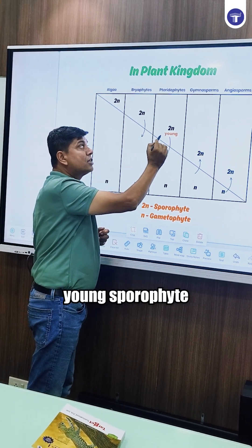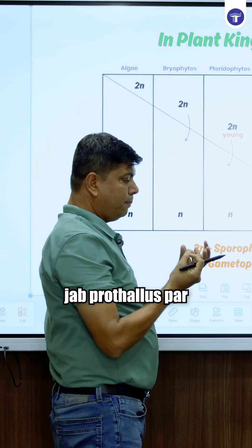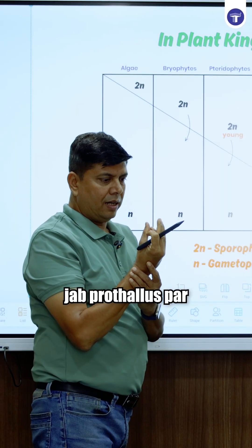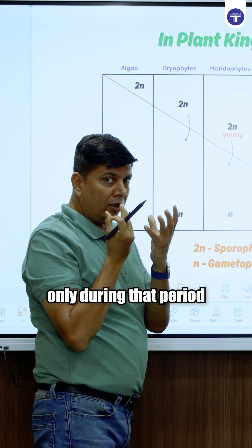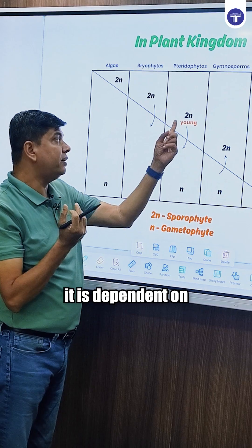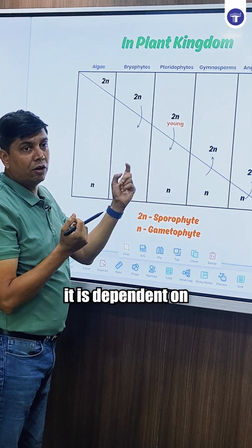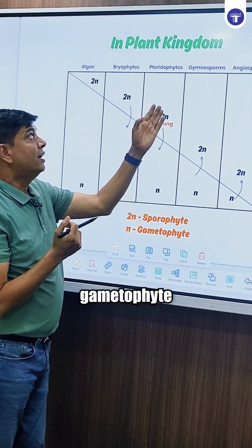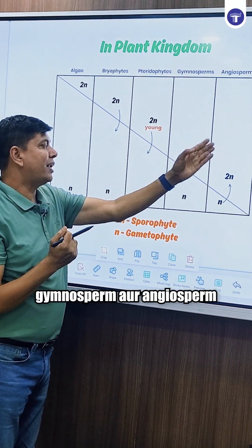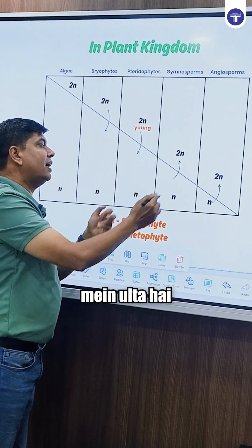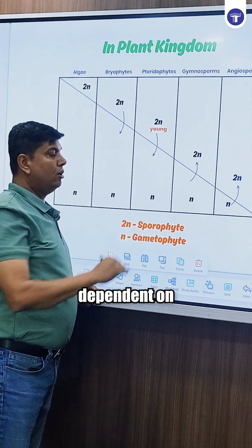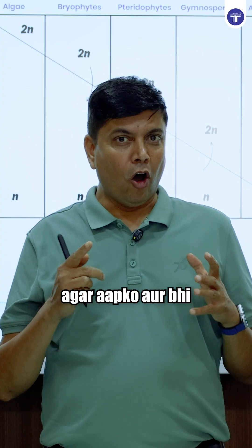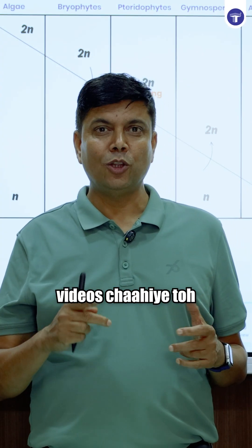In pteridophyte, only the young sporophyte — when it develops in the prothallus — during that period it is dependent on gametophyte. In gymnosperm and angiosperm, gametophyte is dependent on sporophyte.